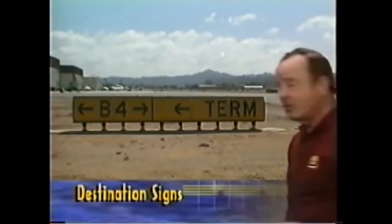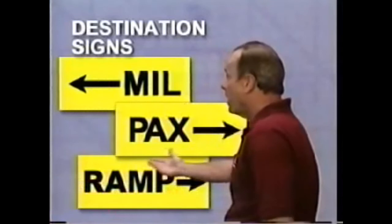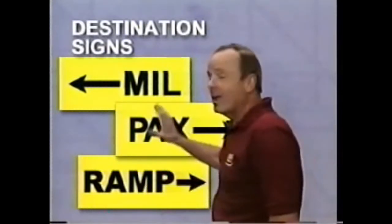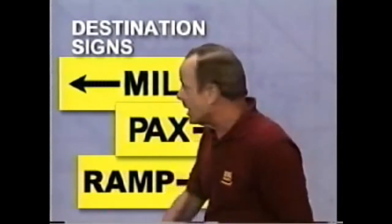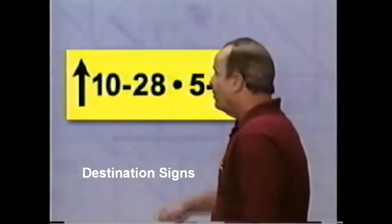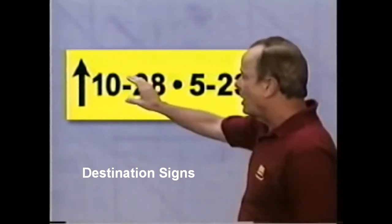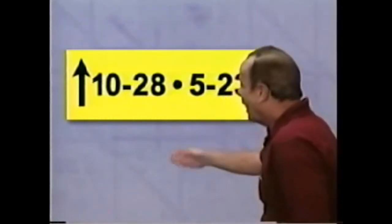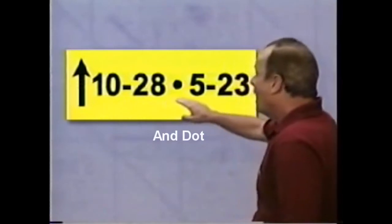When a sign points the way to a destination such as a military facility, a passenger terminal, or a ramp, then it's called a destination sign. Destination signs can use abbreviations or whole words — whatever is necessary to get the message across. Like direction signs, destination signs are yellow with black letters and they always have an arrow. Destination signs can also be used to point the way to runways, and you'll see these signs very often at the entrance to a taxiway from an apron area. They show the runway number and an arrow points the direction you take to get to that runway. If the same route leads to two runways, the destination sign will show both runway numbers separated by a dot, and the dot should be read as AND. So this route will take you to runway 10-28 and runway 5-23.